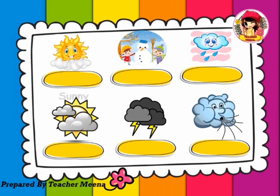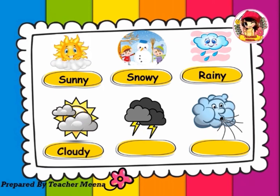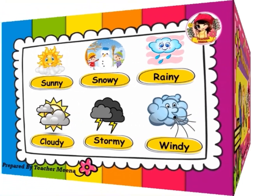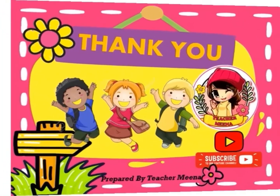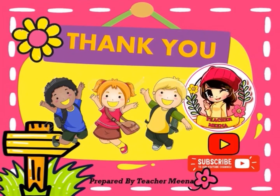Number one: sunny. Number two: snowy. Number three: rainy. Number four: cloudy. Number five: stormy. Number six: windy. Thank you, kids!